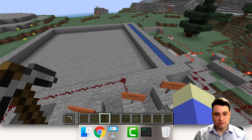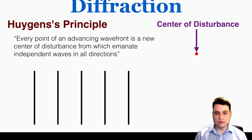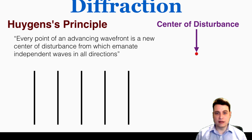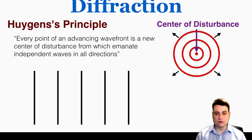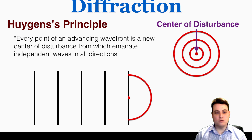Just as a quick reminder, Huygens principle is the idea that every point of an advancing wavefront is a new center of disturbance from which emanate independent waves in all directions. So what this means is if you have a wave moving from left to right, as is the case in the wavefront displayed here, each individual point on any line in that wavefront is behaving like a center of disturbance with waves emanating out in all directions.